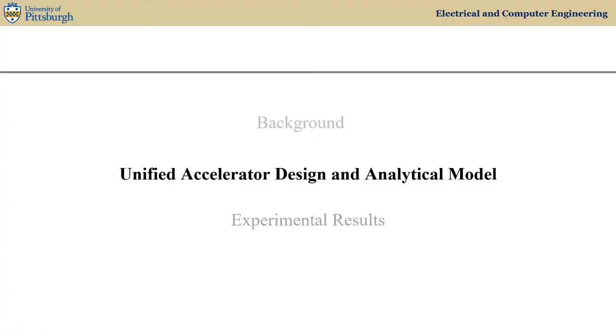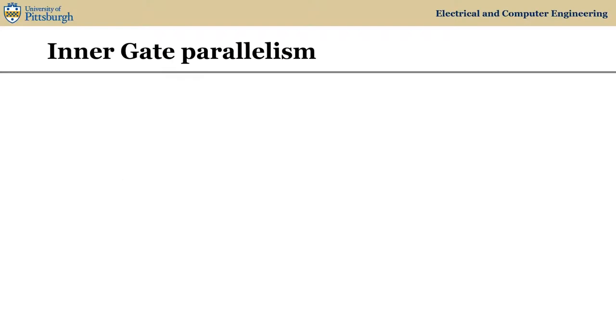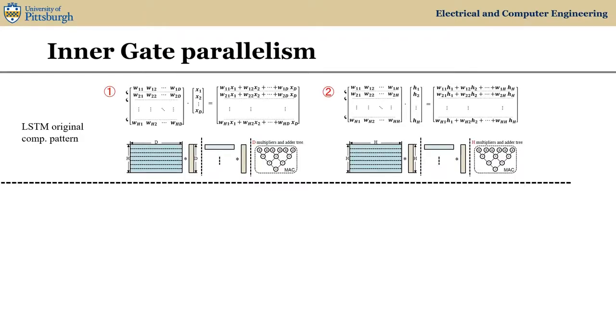Next, I've introduced my design, the unified LSTM accelerator and its analytical model. If we dig into a gate, we can find that the two MACs can be converted to element-wise operation like patterns three and four. The original pattern one needs D multipliers with an adder tree and pattern two needs H multipliers with an adder tree. Each row of the weight is multiplied with the vector and get accumulated.